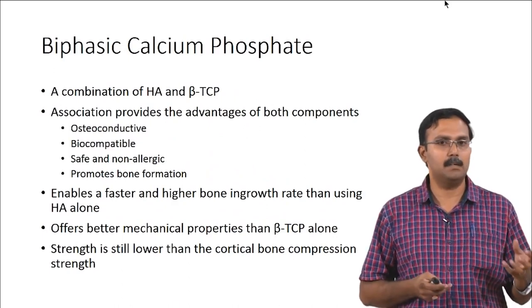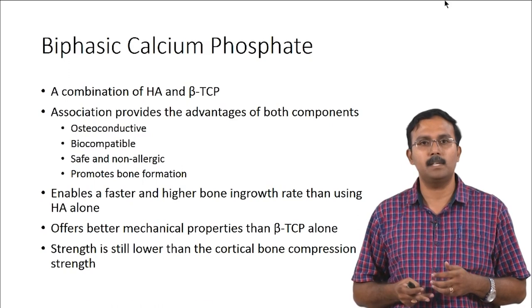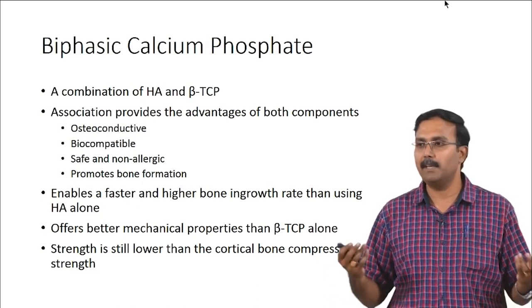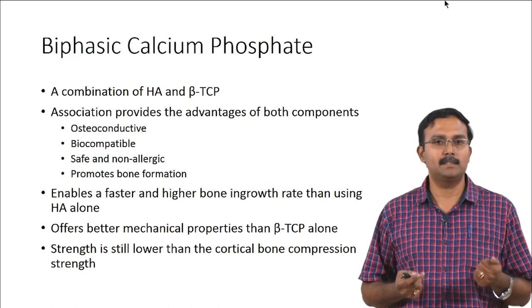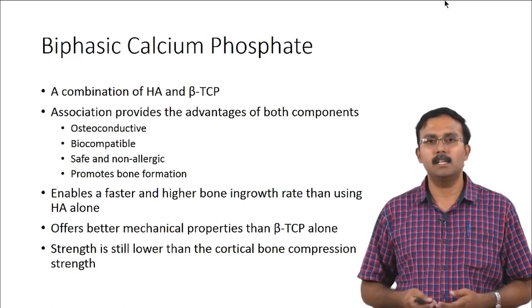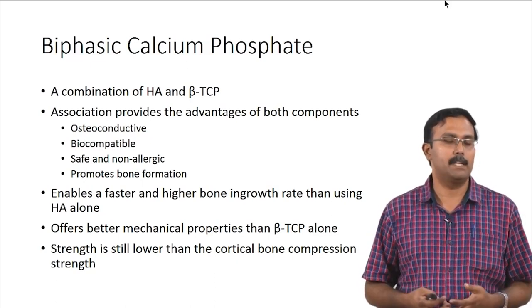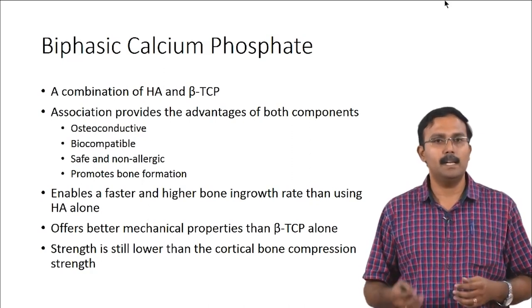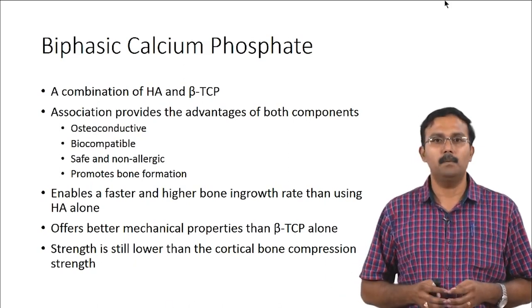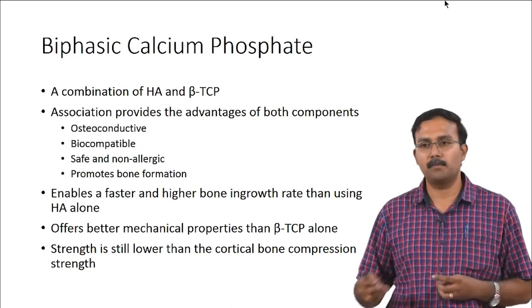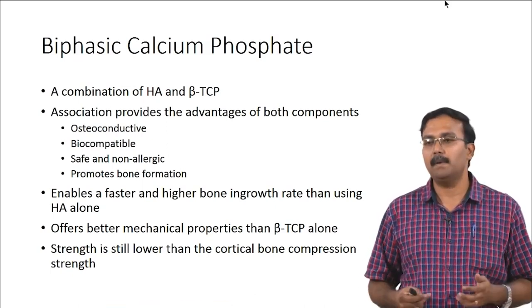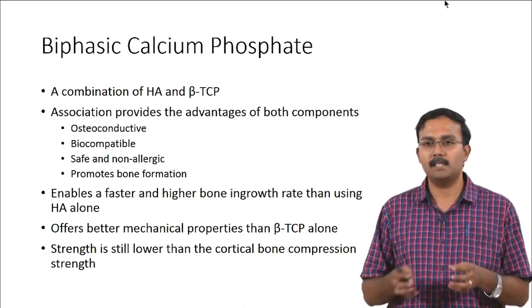Biphasic calcium phosphate is a combination of hydroxyapatite and beta tricalcium phosphate, and is preferred to using either independently. It has the advantages of both materials — it is highly osteoconductive, biocompatible, safe, and non-allergic. It promotes new bone formation, making it osteoinductive, and enables faster and higher bone ingrowth rate compared to hydroxyapatite alone. It offers better mechanical properties than beta tricalcium phosphate alone; however, strength is still lower than cortical bone compressive strength, so optimizing for desirable mechanical properties remains a challenge.